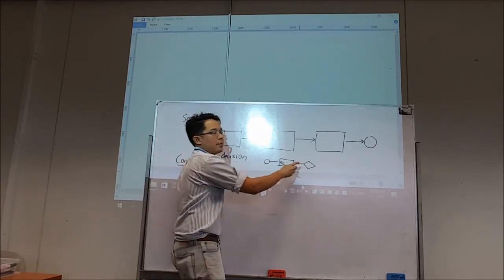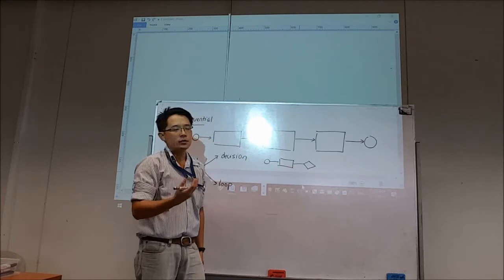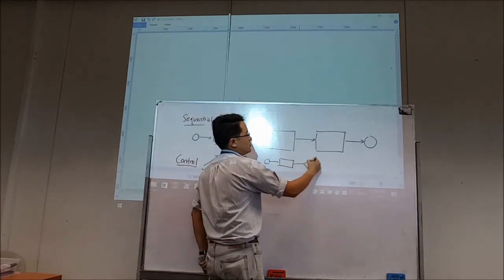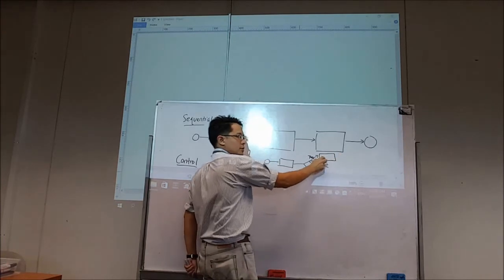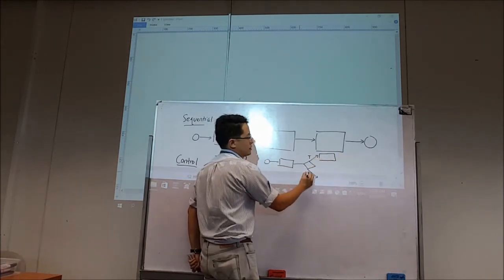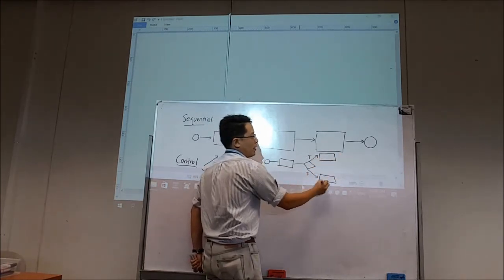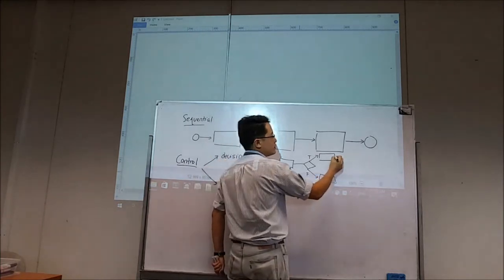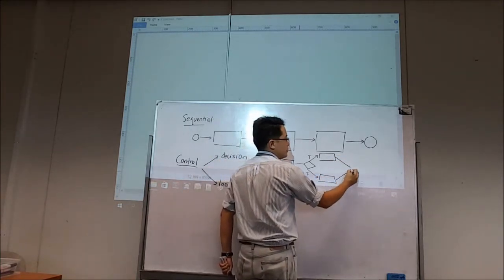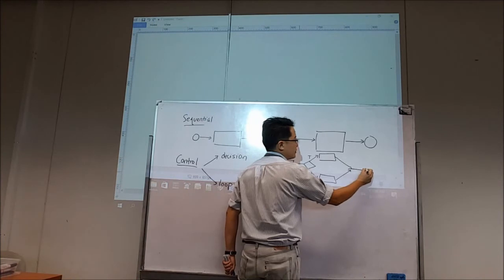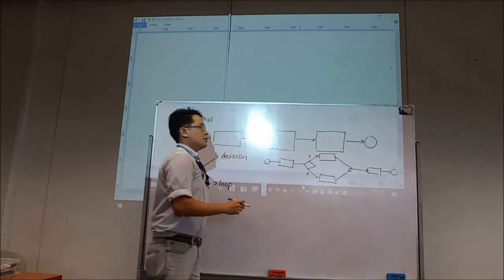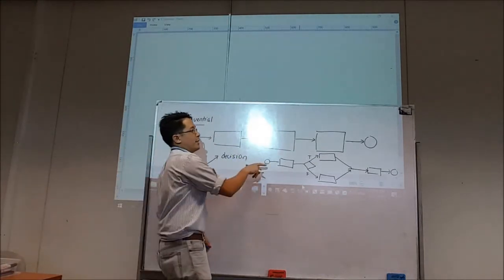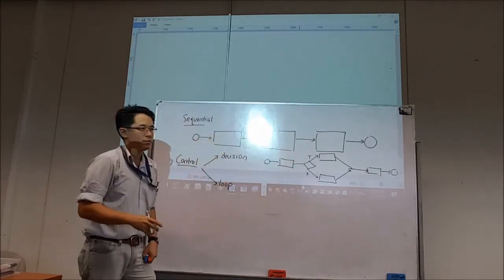So the test is actually producing either true or false. If it's producing true, it will go for this process. If it's producing false, then it will go for another process. So as you can see, it's no longer sequential because it can follow different paths.